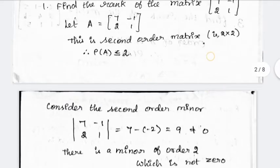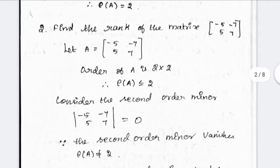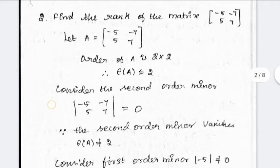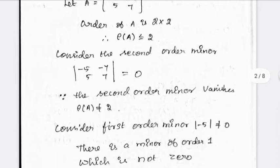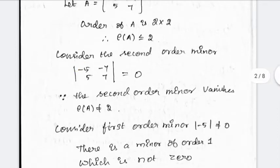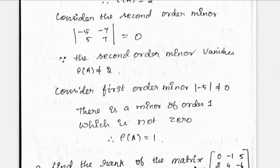The non-zero minor count is 2. Next, find the rank of this matrix. This is 2×2, so rank is less than or equal to 2. If you find the determinant and you get 0, rank of the matrix is less than 2. We find a minor of value minus 5. The determinant of that minor is not equal to 0. Therefore, rank of the matrix is 1.